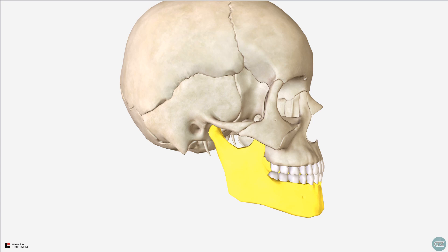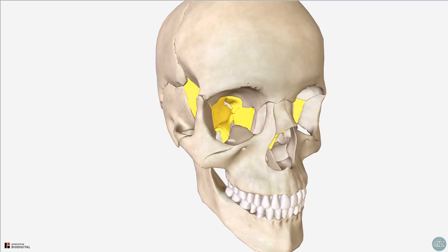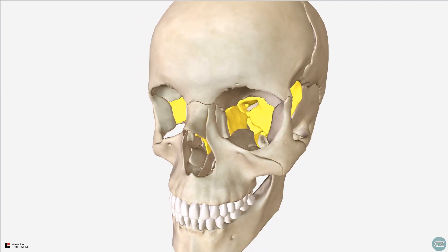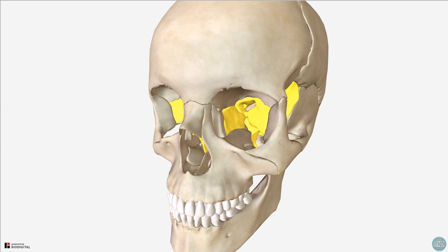The mandible is generally considered separately from the cranium, and we'll discuss this separately in another tutorial. There is some overlap with the bones of the neurocranium, and some references will include parts of the sphenoid and ethmoid bones within the viscerocranium, as they form part of the structures of the orbits and nasal cavities.